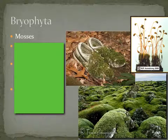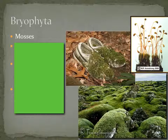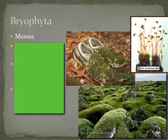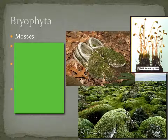The first group of plants we're going to talk about are the bryophytes, or division Bryophyta. Division is actually the same thing as the phylum — they just call it divisions in plants. The most common plants found in division Bryophyta are, of course, the mosses, and they have several key characteristics we'll be talking about.